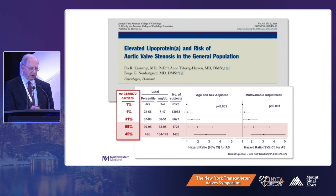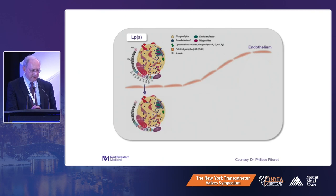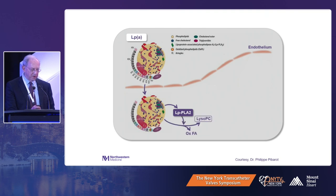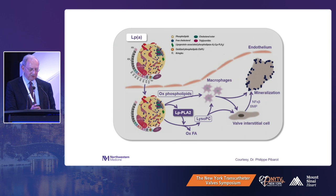The schematic from Philippe Pibarot's work is that Lp(a) enters the intracellular space, gets hydrolyzed by phospholipase A2, creating lysophosphatidylcholine which, along with oxidized phospholipids in Lp(a), creates a large inflammatory matrix recruiting macrophages, turning interstitial valve cells toward an osteoblast phenotype, and leading to mineralization. The importance of this is that there must be druggable targets — perhaps we can begin to slow down this process.